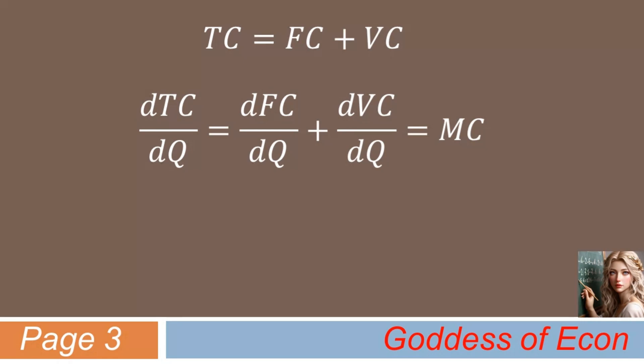Marginal cost, using calculus, is defined as the ratio of an infinitesimal change in the total cost, to an infinitesimal change in the output produced, which is simply a derivative of the cost function with respect to Q.